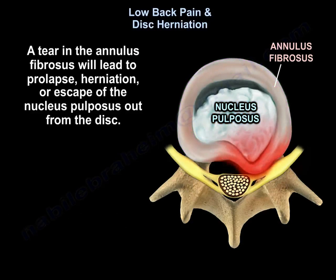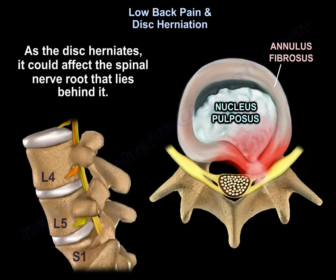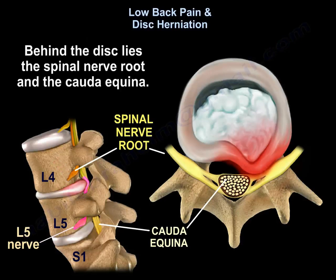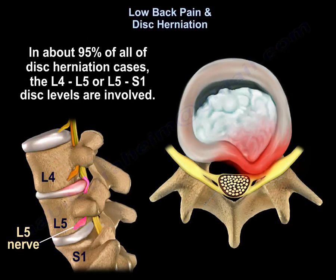A tear in the annulus fibrosus will lead to prolapse, herniation, or escape of the nucleus pulposus out from the disc. As it herniates, it could affect the spinal nerve root that lies behind it. Behind the disc lies the spinal nerve root and the cauda equina. In about 95 percent of all disc herniation cases, the L4-L5 or L5-S1 disc levels are involved.